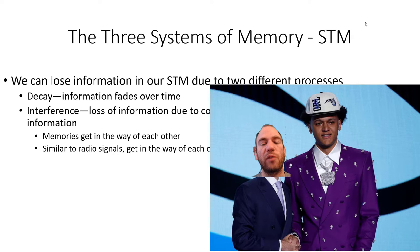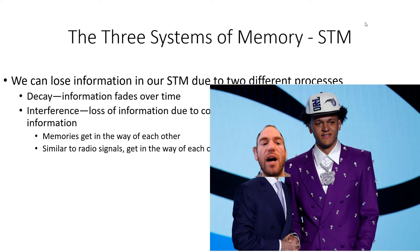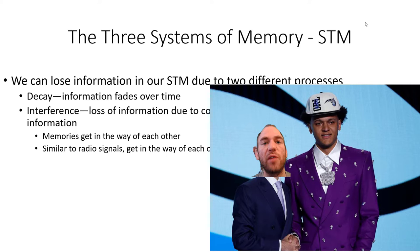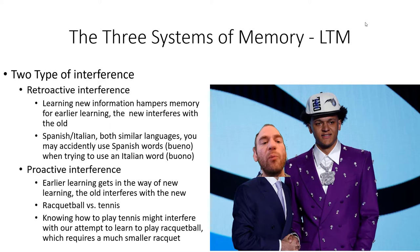For interference, imagine radio systems when traveling across state lines or into new cities — different stations playing over each other. New incoming information may interfere with recently encoded information, causing those memories to scramble together, making it difficult to retrieve either. This new information gets in the way of the other, preventing you from remembering that person's name.